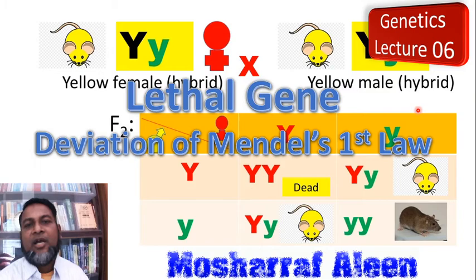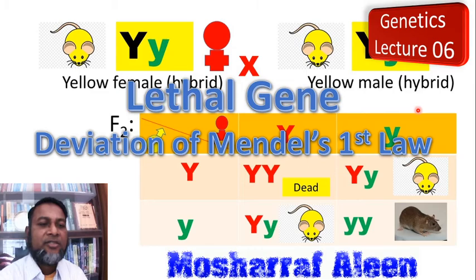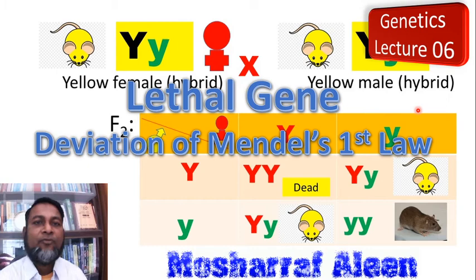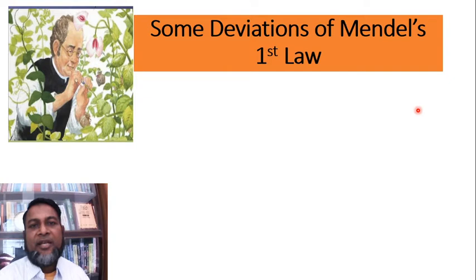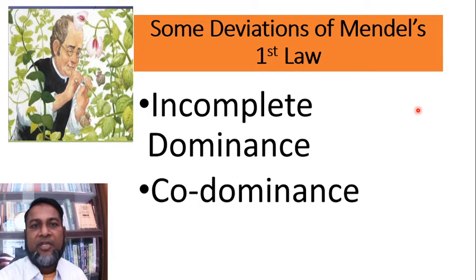Dear friends, you are most welcome to my online class on genetics. This is lecture 6. Today we discuss Lethal Genes, a deviation of Mendel's First Law. Some deviations of Mendel's First Law are Incomplete Dominance, Codominance, and Lethal Genes.